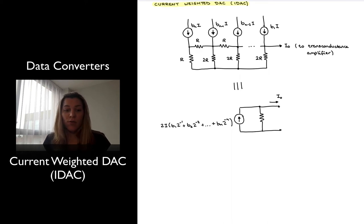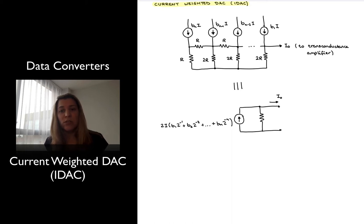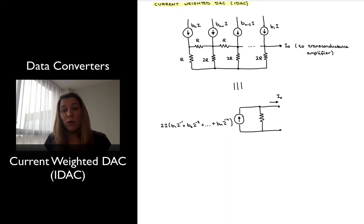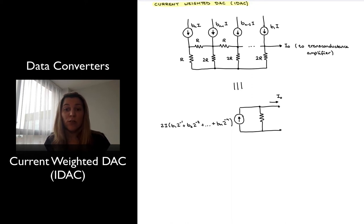One of the advantages of this type of circuit, and the advantages of current DACs or IDACs in general, is that they are easy to implement with transistors — the current sources are easily implementable. They also have higher speeds than their equivalent voltage DAC counterparts. But one of the limitations is that because they output a current, if what we are interested in is an output analog voltage, then we have that extra step of having to run that current through a transconductance amplifier to turn it into an output voltage.